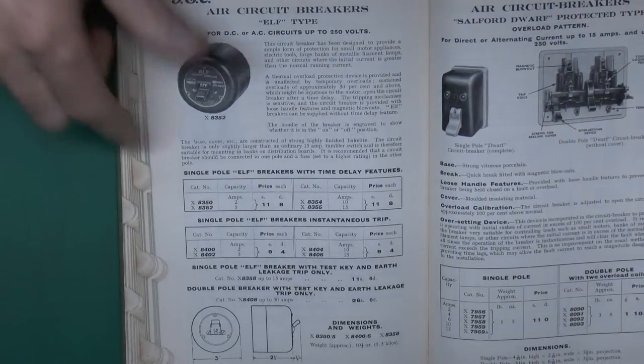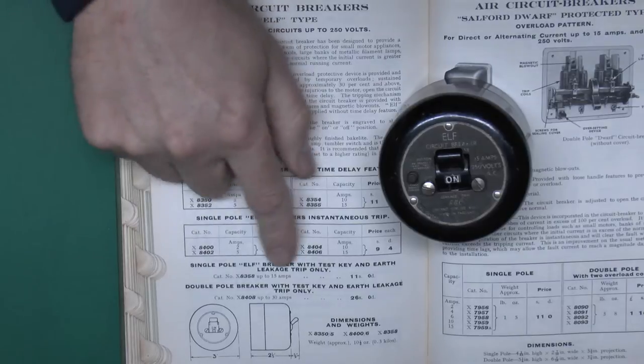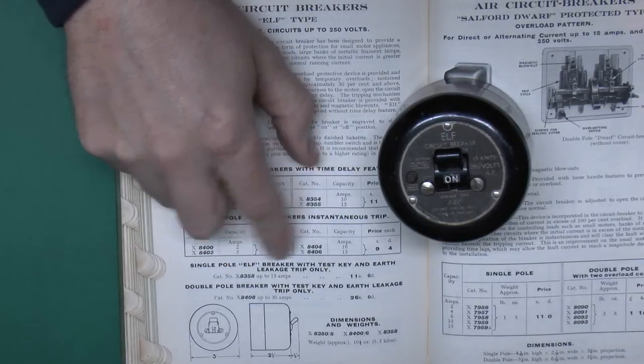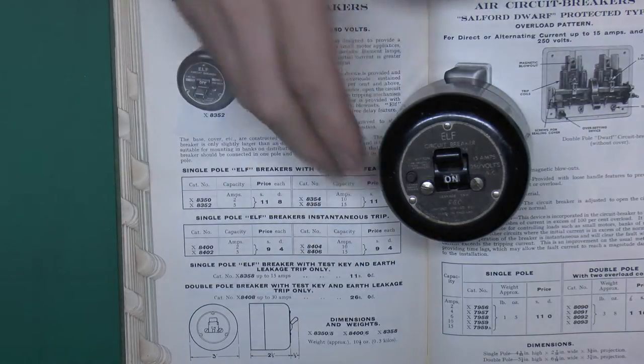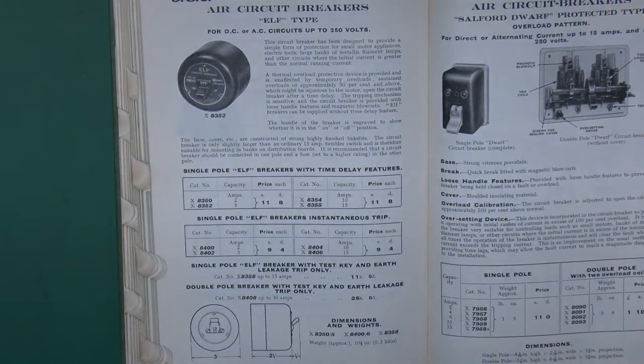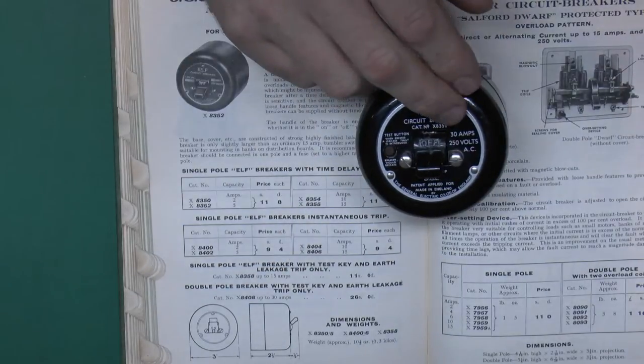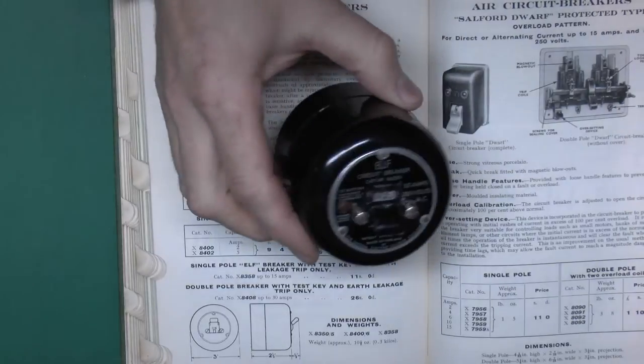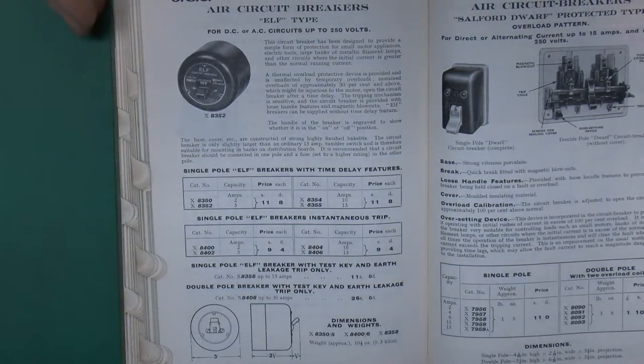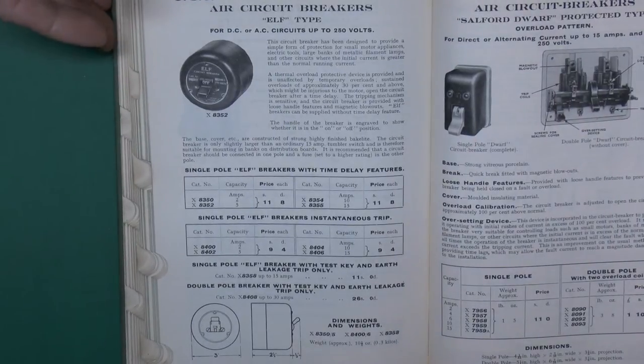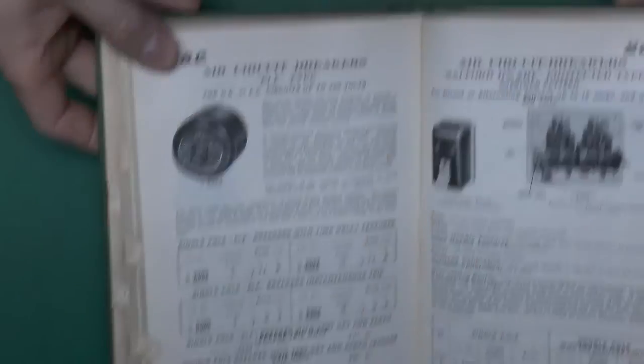Now there's no date on these but they are located in this catalogue. Now the 15 amp one here at the bottom is actually this one. There it is down at the bottom there. Eleven shillings which was quite a lot of money at the time. This catalogue is from 1935. This one there is actually a 30 amp one listed here. So talking about the 1930s for these devices made by the General Electric Company. That's the English one of course not the American one of a similar name.